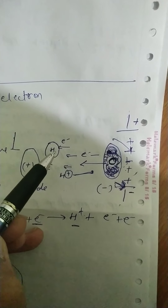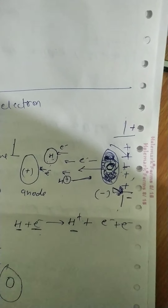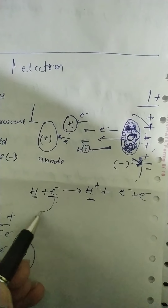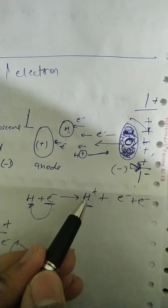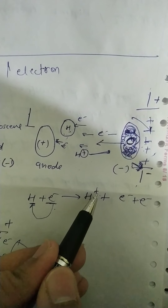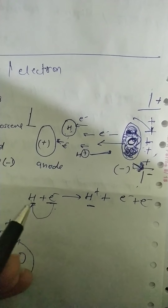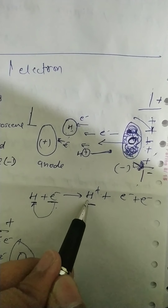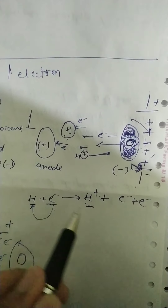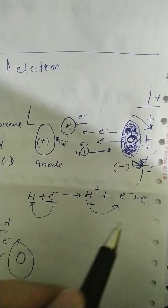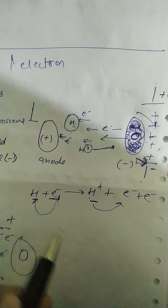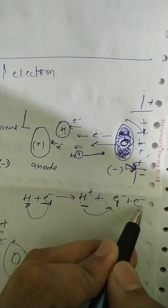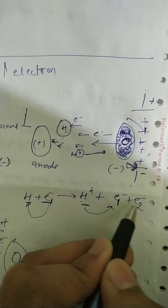When the electron collides with the hydrogen, there is a formation of H⁺ — means when the electron collides with hydrogen, it converts the hydrogen into H⁺. This means hydrogen will lose the electron, so we can write E⁻. So this E⁻ collides and there is formation of a second electron.